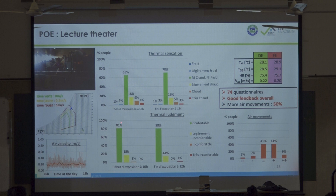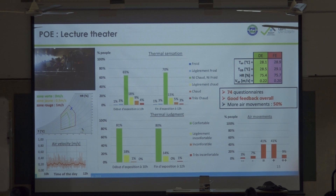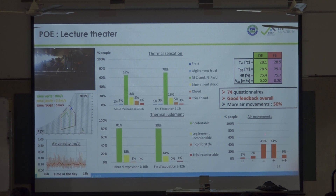Thermal judgment — comfortable vs. uncomfortable — is slightly different from thermal sensation. At the beginning 81 percent felt comfortable; at the end the same 80 percent. There is a difference between the thermal sensation vote and the thermal judgment vote because some people say they feel slightly warm but are still comfortable. Despite the low air velocity, people are more or less happy.